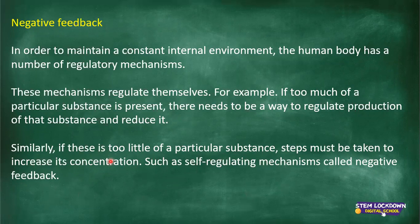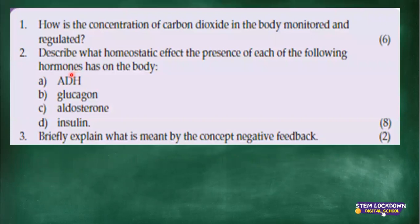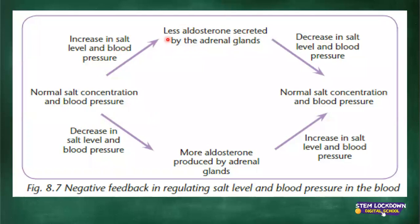Negative feedback is a self-regulating mechanism that ensures conditions in your body are regulated and kept at normal concentrations. ADH ensures osmoregulation. Glucagon ensures glucose concentrations are kept at normal levels. Aldosterone keeps water and sodium concentrations at normal levels. Insulin ensures glucose concentrations are kept at normal levels. In the diagrams, when there's an increase, a particular action is taken; when there's a decrease, another action is taken. That is negative feedback.